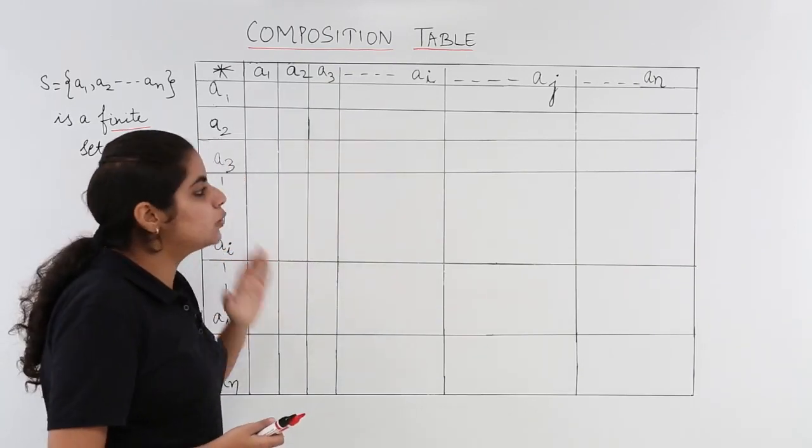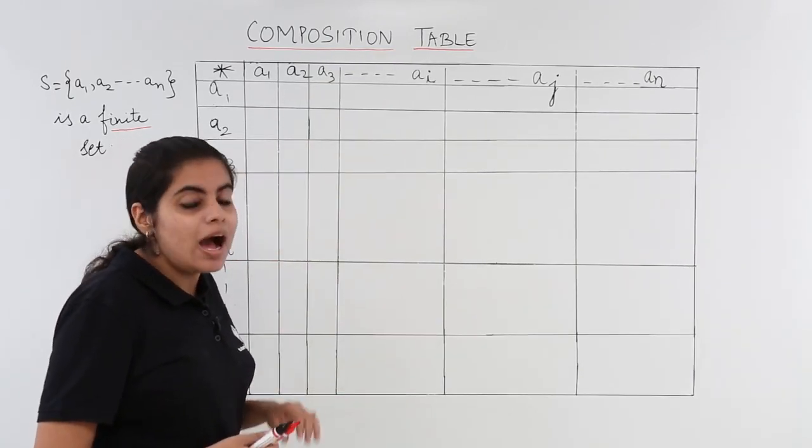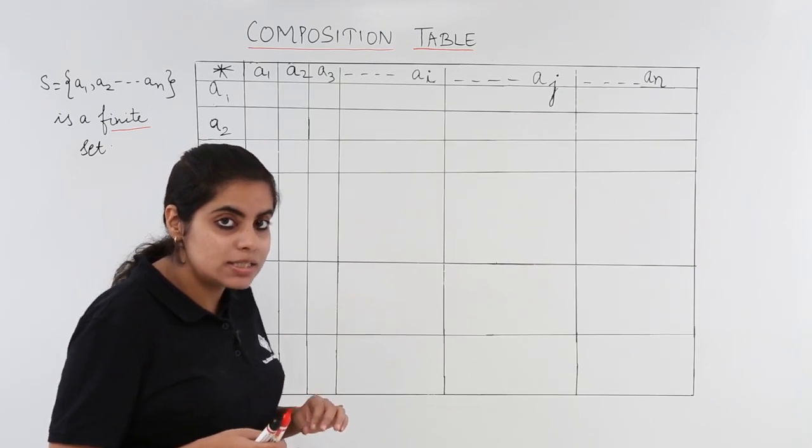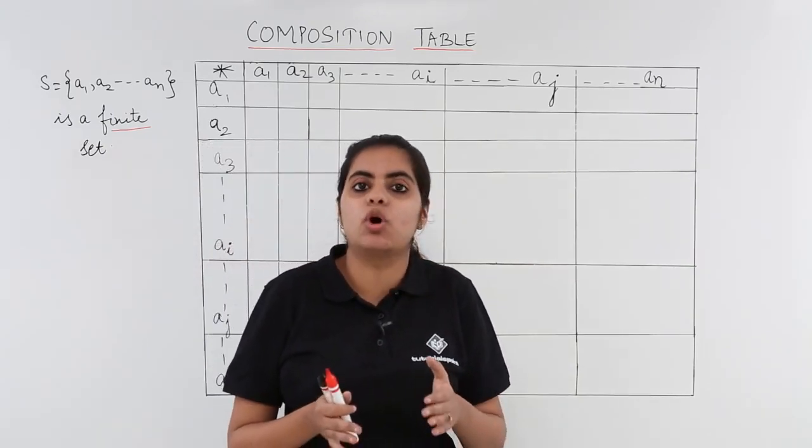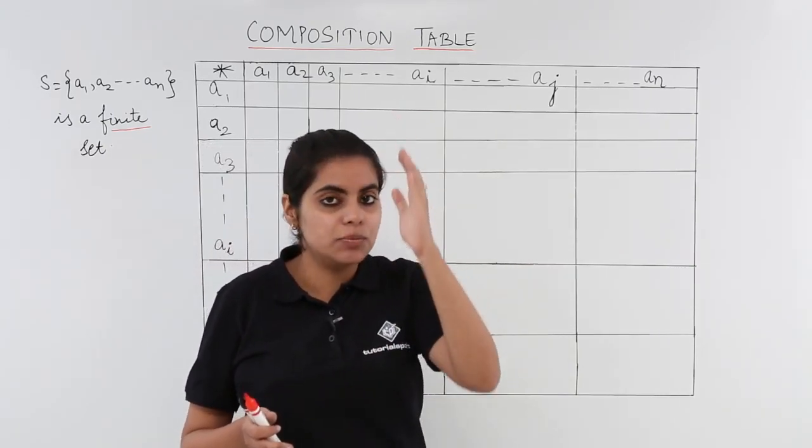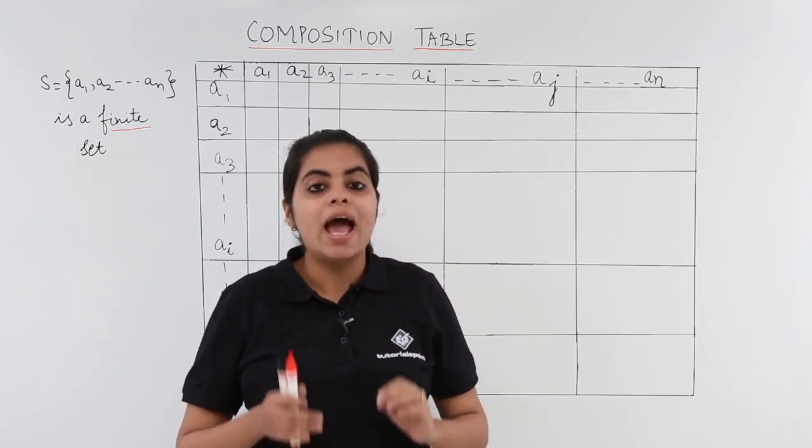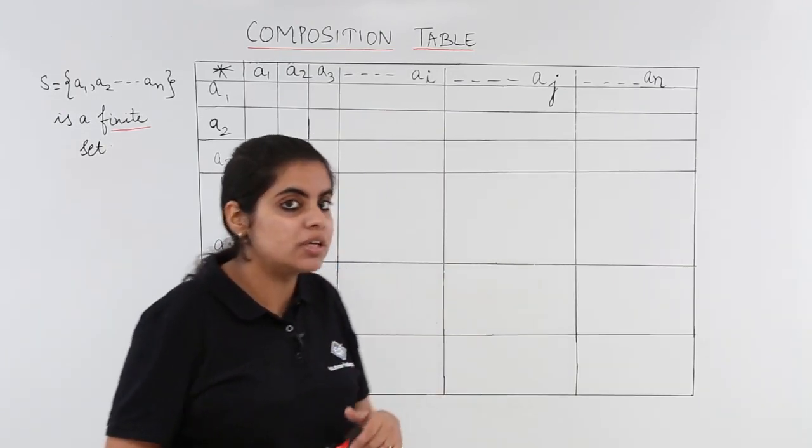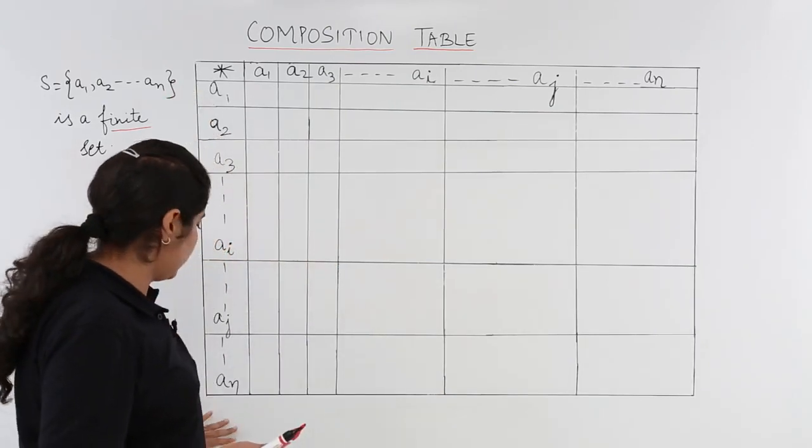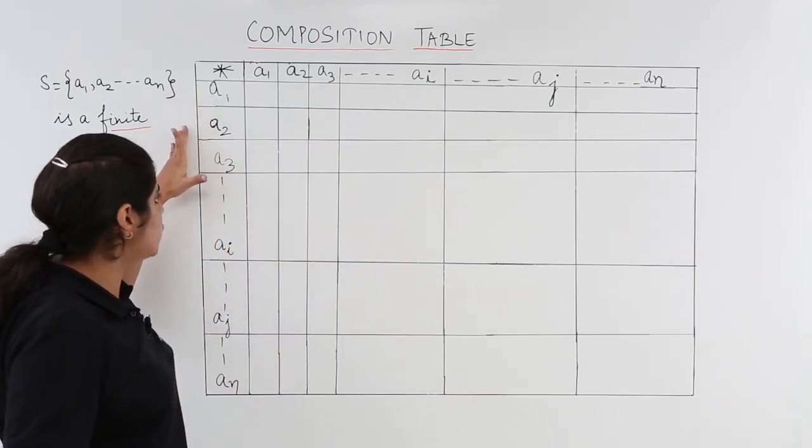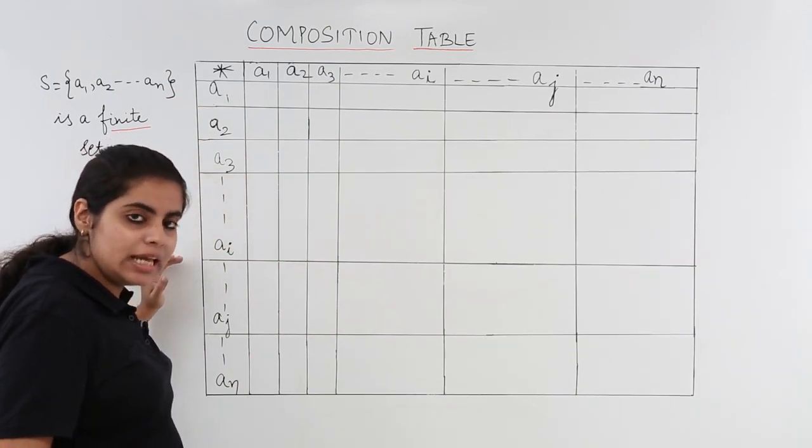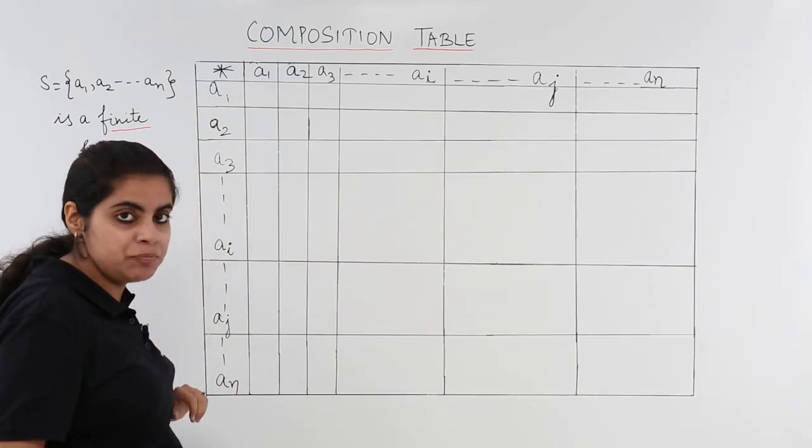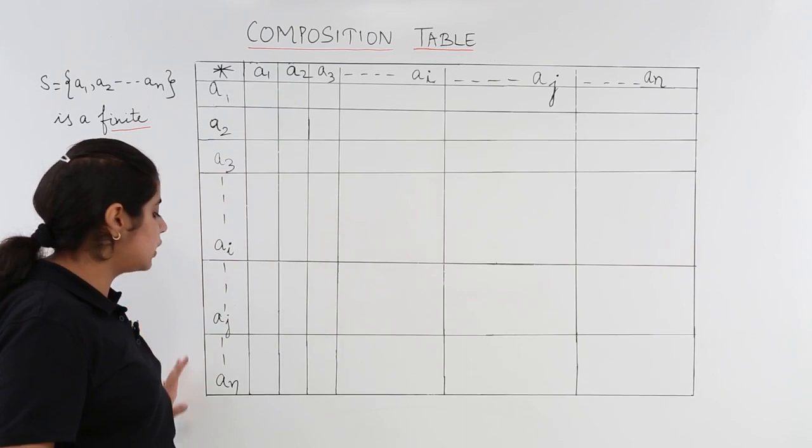Now, in order to draw this kind of table, I have to make some grid, some horizontal rows and some vertical columns, and write all the elements one by one. Firstly a1, a1, a2, aj till an. This is the first vertical column.